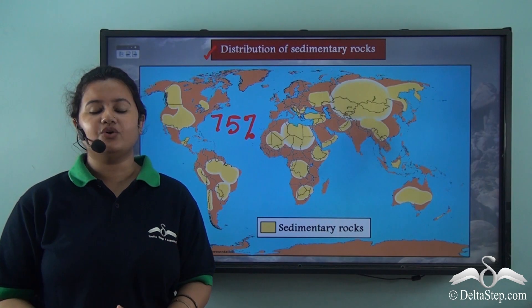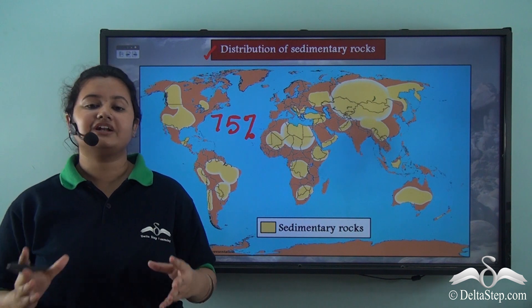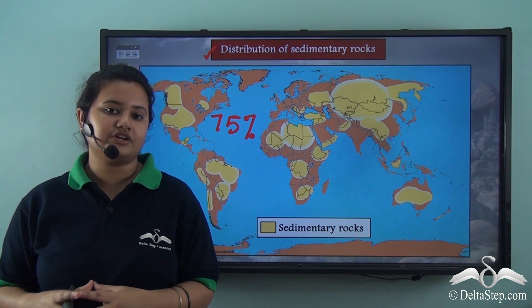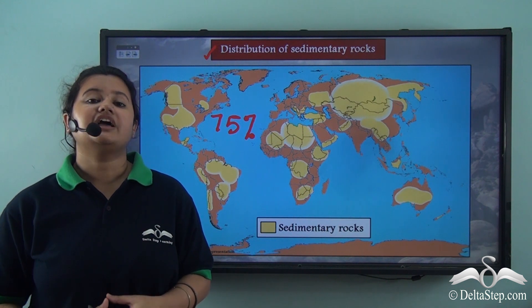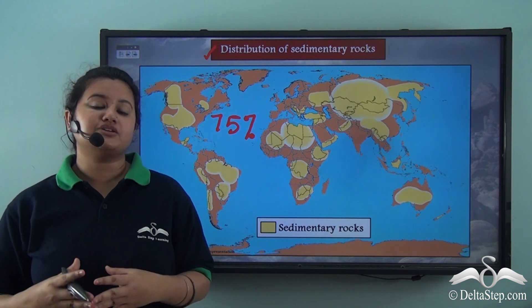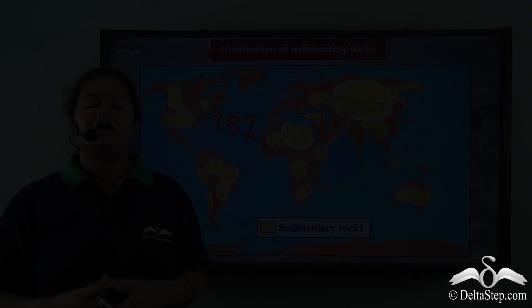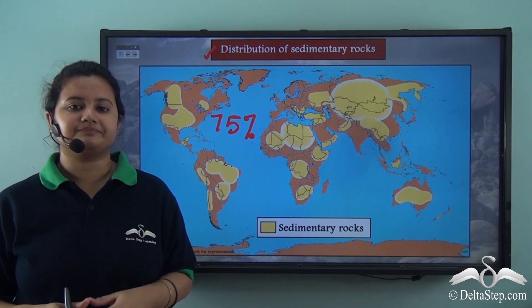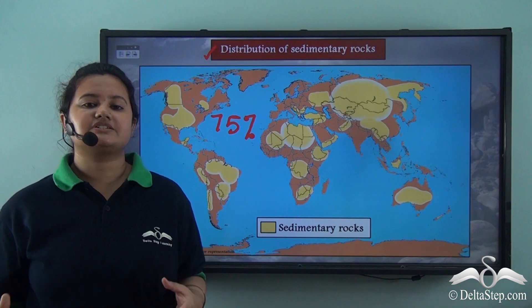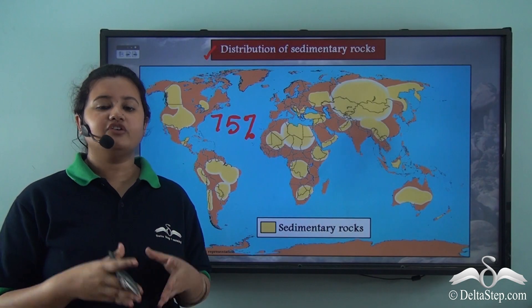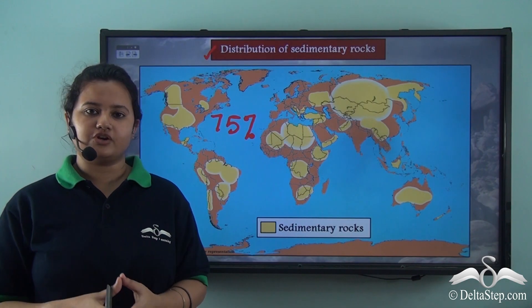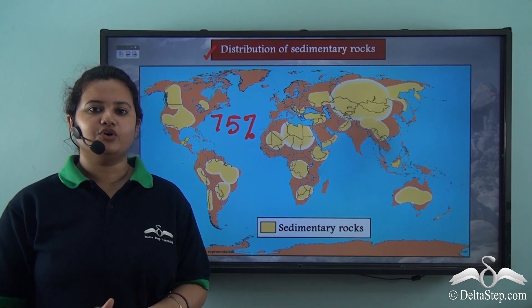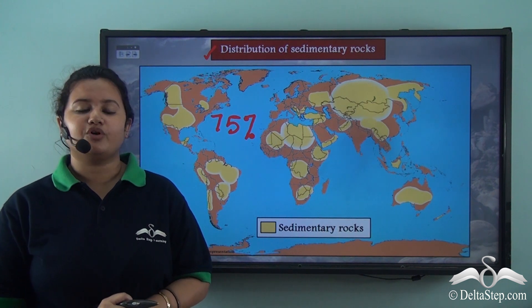In today's video we studied about different classifications of sedimentary rocks. We saw that sedimentary rocks can be classified based on the way they are formed and based on the agents by which they are formed. Next we studied about characteristics of sedimentary rocks, and finally we saw the uses and distribution of sedimentary rocks. In our next video we will discuss about metamorphic rocks.